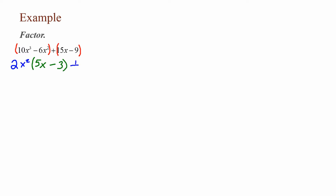I'll bring down my plus sign. Now looking at 15x minus 9: 15 and 9 share a 3, so 15x without 3 is 5x, and 9 without 3 is 3. Our first term is 2x² times (5x minus 3), and our second term is 3 times (5x minus 3). Our greatest common factor is now 5x minus 3.